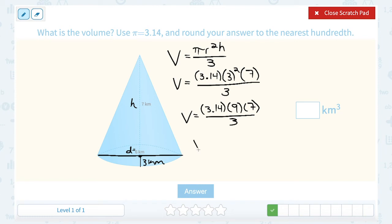Now, from here, I'm going to multiply all three of those numbers together that are on the top of my formula. 3.14 times 9 times 7. And that's going to give me 197.82. And I still have to divide that whole thing by 3. So now divide it by 3. And I get 65.94.